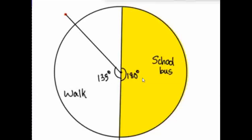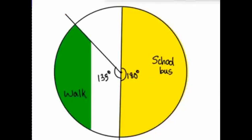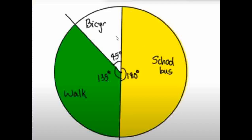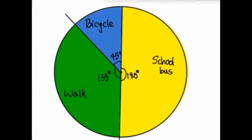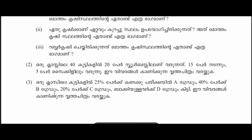This is the color of the school bus. This is the color of the walking — it is green. This is the green. This is 45 degrees for the bike. This is the other 45 degrees. This is the bicycle. The color of the walk is green. This is blue. This is the pie chart.